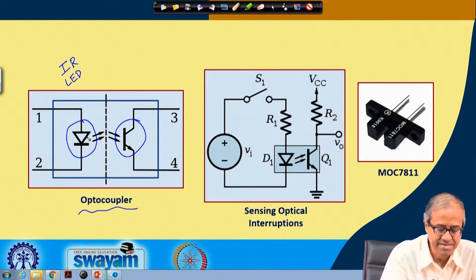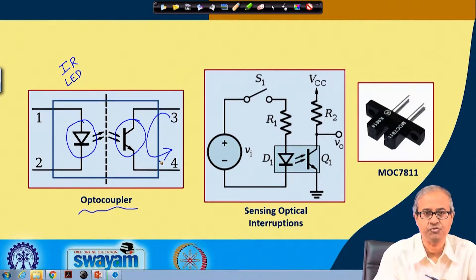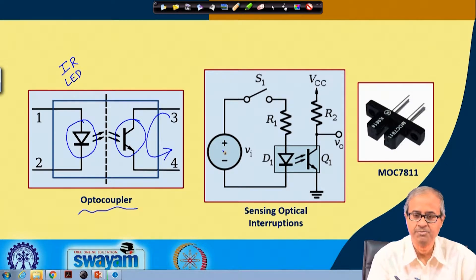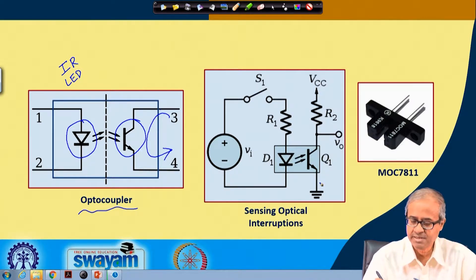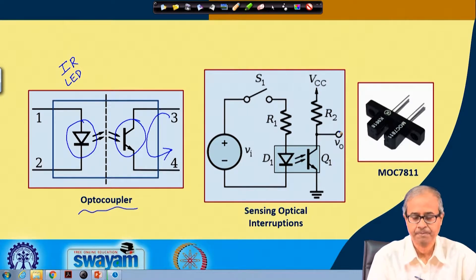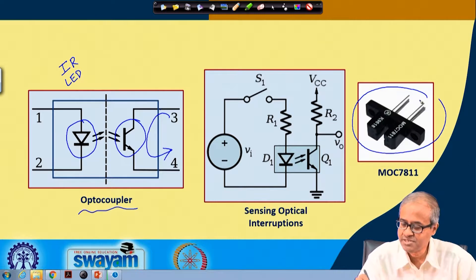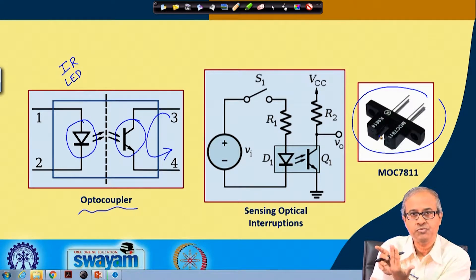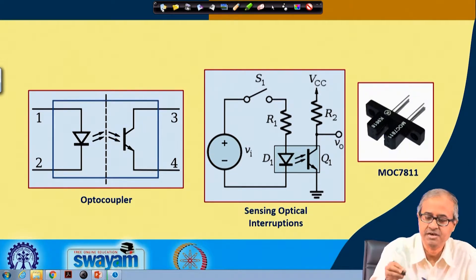Whenever there is light, the photo transistor turns on; when there is no light, it is off. Whenever the LED throws light on the transistor, the transistor conducts and current flows from pin 3 to pin 4. The LED side has a resistance in series with a power supply, and the output side uses a resistance with the transistor — when conducting, the output voltage is low; when off, the output is close to VCC. The wheel is placed in between the two plates of the optocoupler.